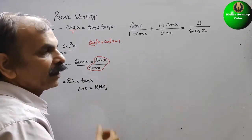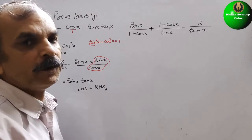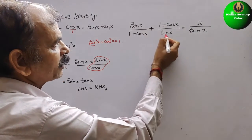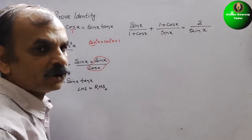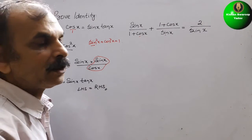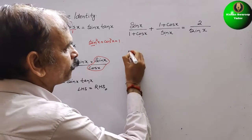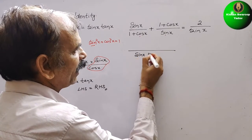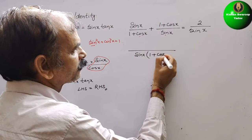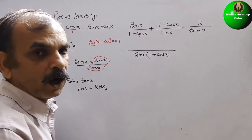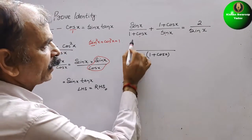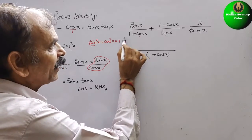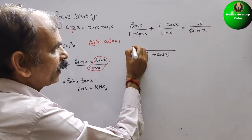Now we come to the second one. We will do the same approach. Here you can see 1 plus cos x, and here sin x is there. So we will take the LCM — just multiply them. So it will be sin x and in bracket 1 plus cos x. Here it will be 1 plus cos x, and we have to multiply by sin x. sin x into sin x is sin square x.